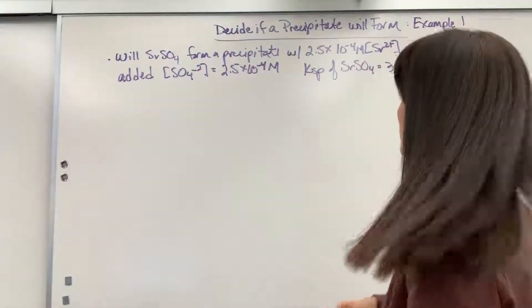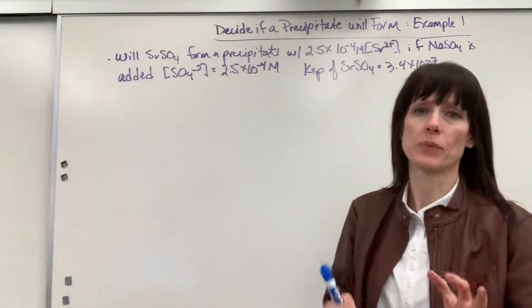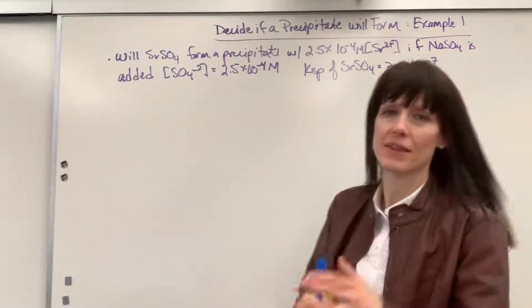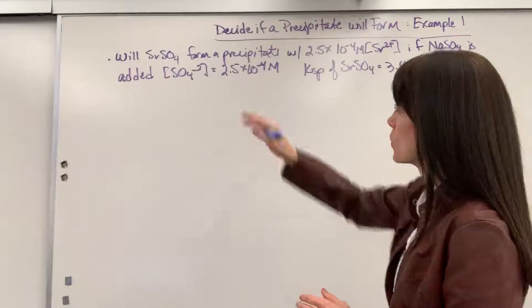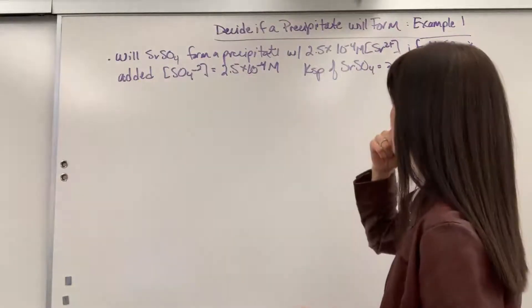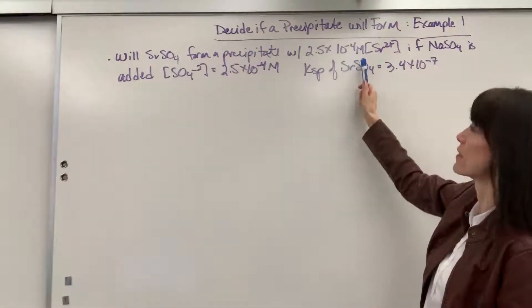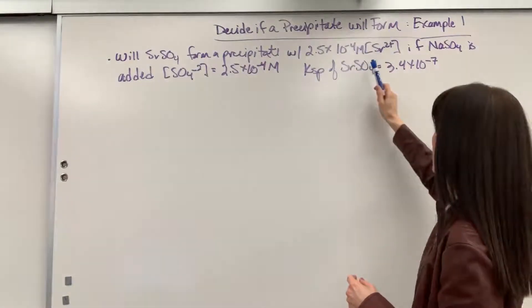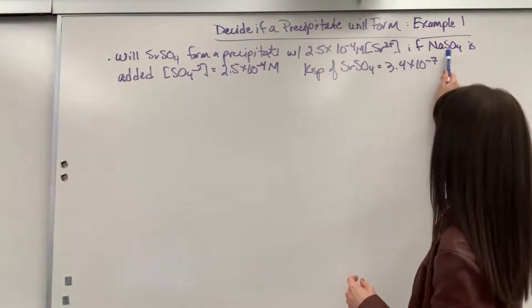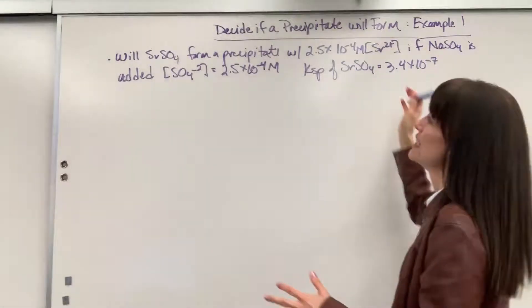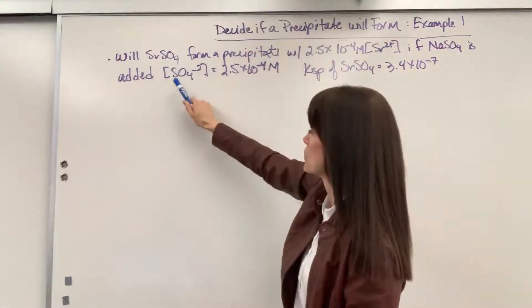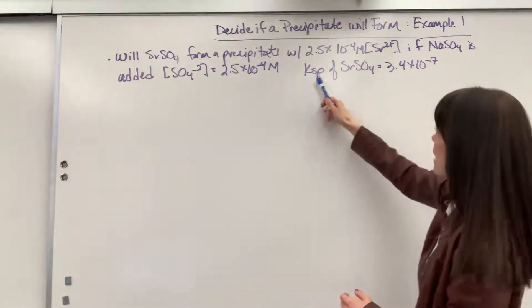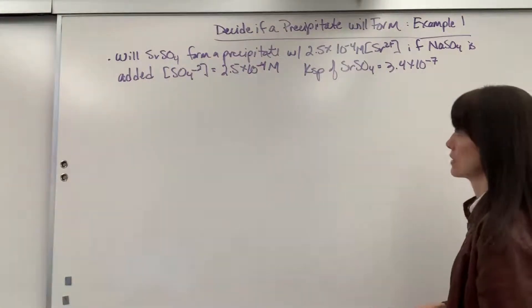Hi, we are going to do a problem where you are asked to decide if a precipitate will form. Let's read this question together and then we'll dissect it. It says, will strontium sulfate form a precipitate with 2.5 times 10 to the minus 5 molar strontium ion? Okay, so there's the concentration of the strontium ion. If sodium sulfate, that's a solid, is added so that the sulfate ion is 2.5 times 10 to the minus 4. And we have a KSP for strontium sulfate is 3.4 times 10 to the minus 7.